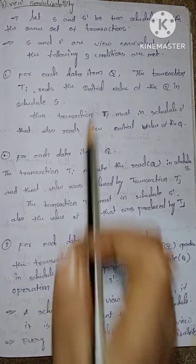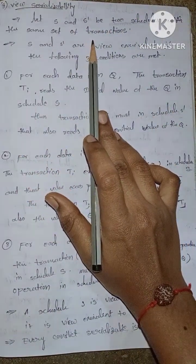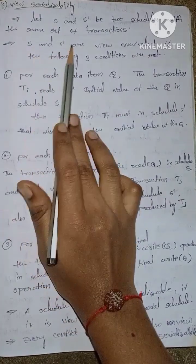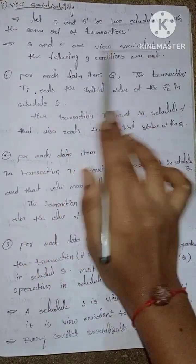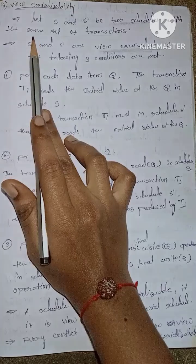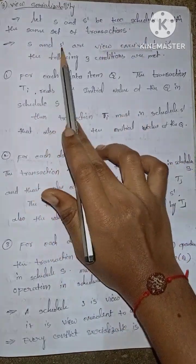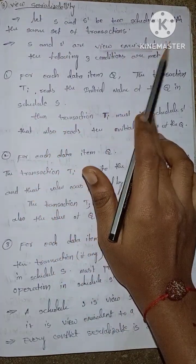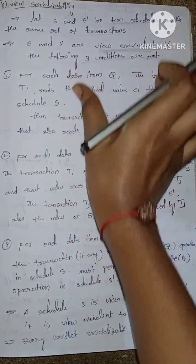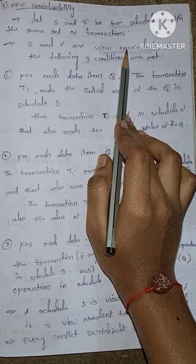Next is view serializability. Let S and S' be two schedules with the same set of transactions. S and S' are view equivalent if the following three conditions are met.